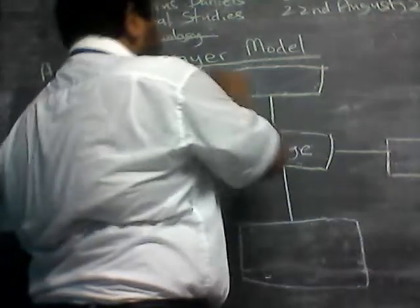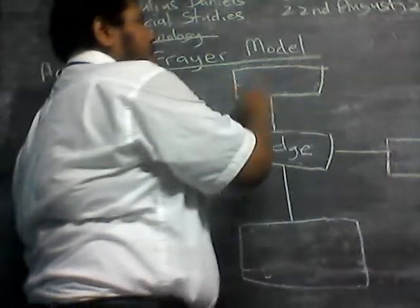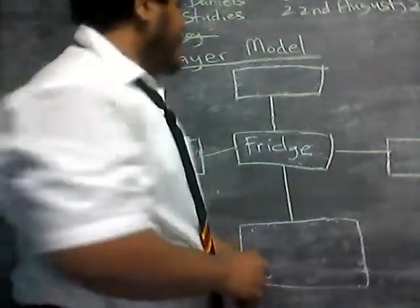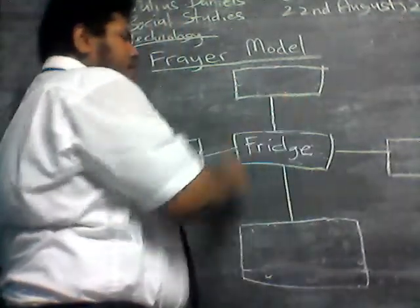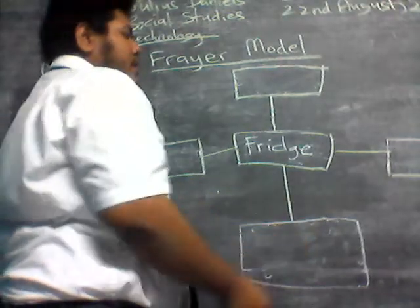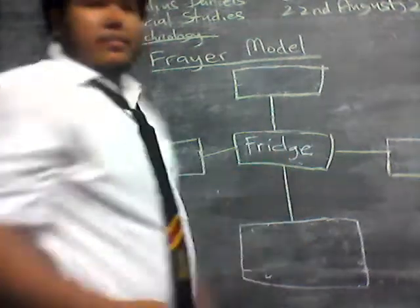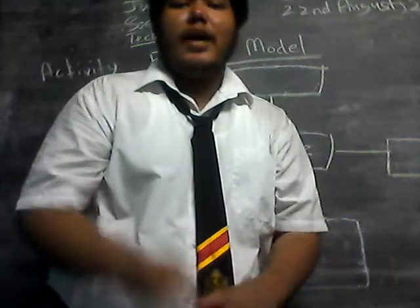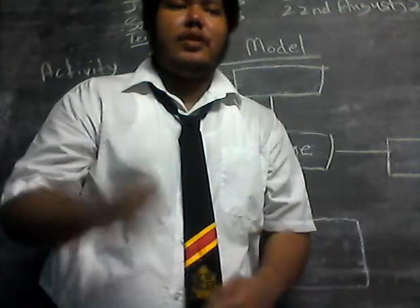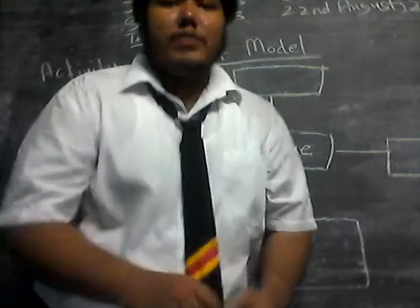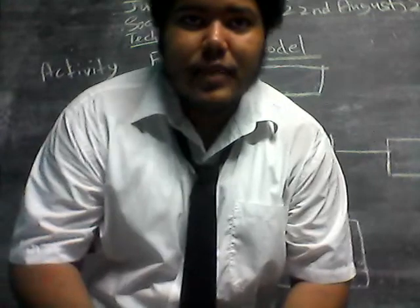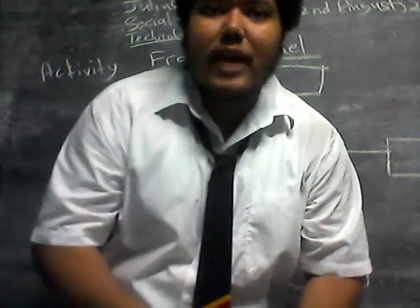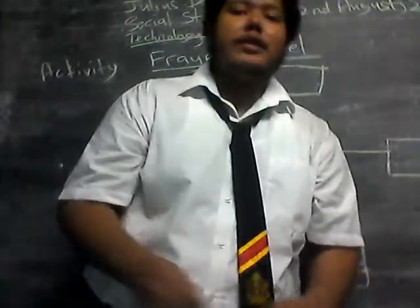Our first activity is called the prayer model. So as you can see we have five different boxes. In the middle box you will put an example, one example, of something or a device which falls under the category of technology.